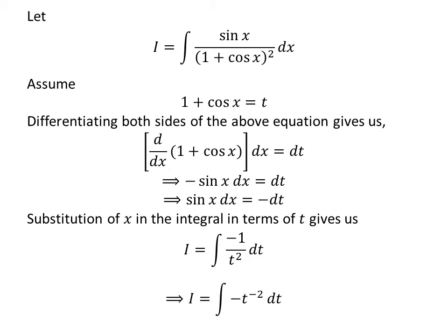Shifting square of t to the numerator gives us I equals integral of minus t raised to the power of minus 2 with respect to t.